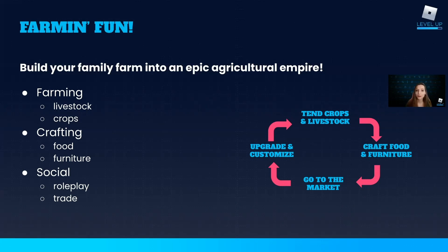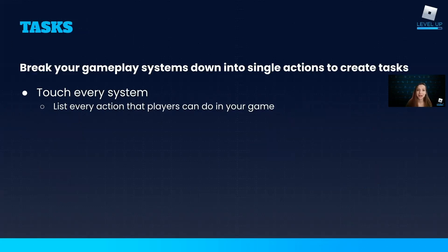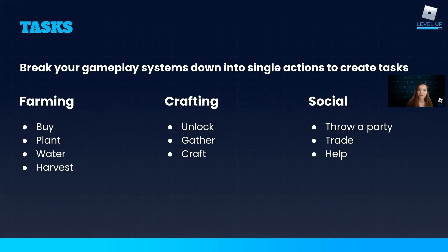Now that we know the core loop and the various systems in our game, we can start figuring out quest tasks — the activities we're going to ask players to do. We'll do that by examining each of our systems and breaking them down into discrete actions, making sure we are hitting every system in the game to drive engagement and give players a variety of things to do.